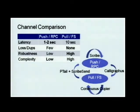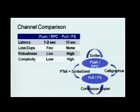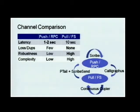The latency of the push channel is much shorter than the file system channel because the file system sometimes has additional overhead from disk or replication. For data loss and duplicates, with push and RPC we can potentially have a little bit of data loss or duplication because there's no way to make a distributed checkpoint between source and target. But with pull semantics, it's much easier to do, and the robustness of the file system is higher.